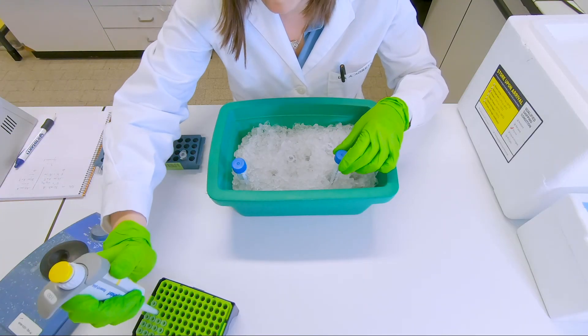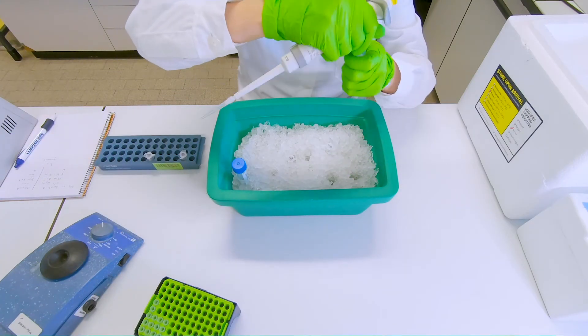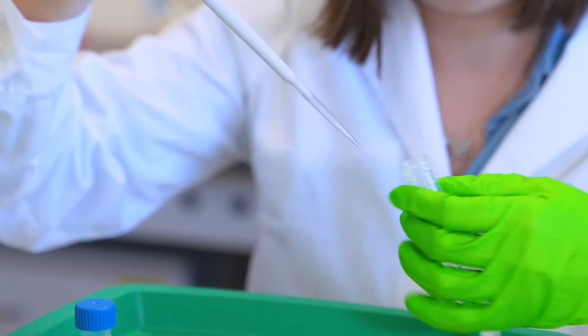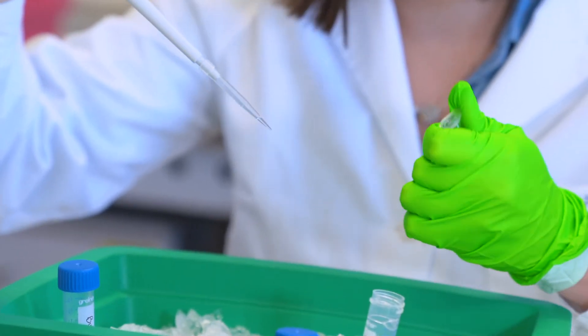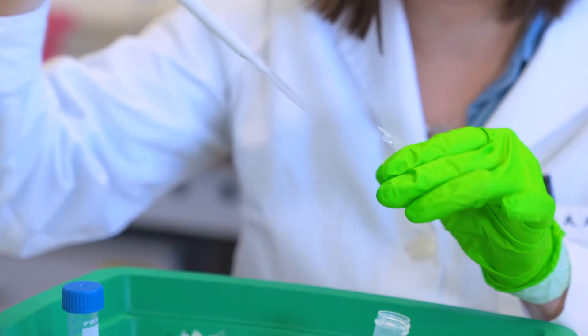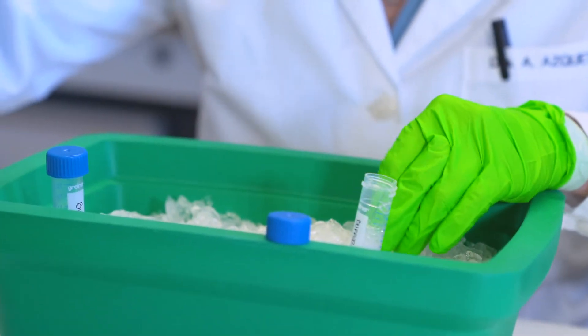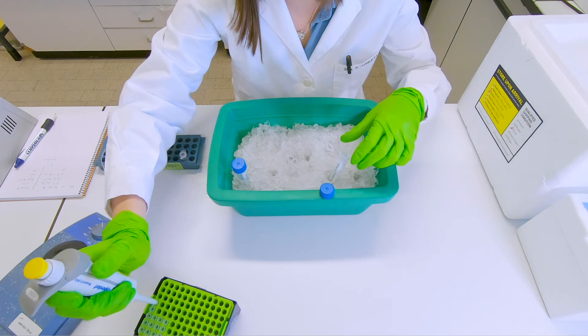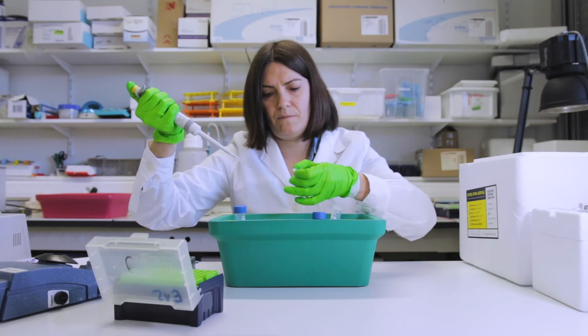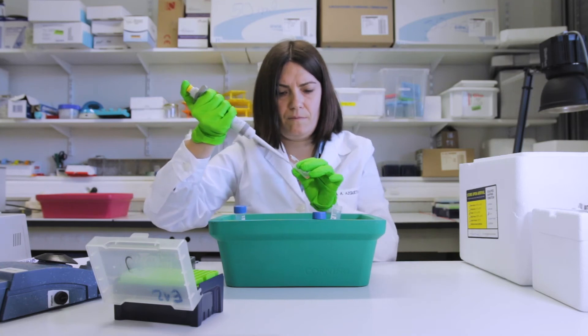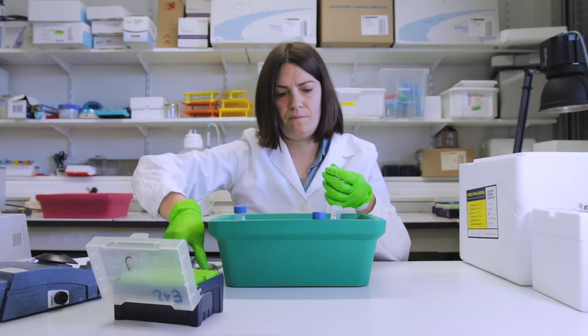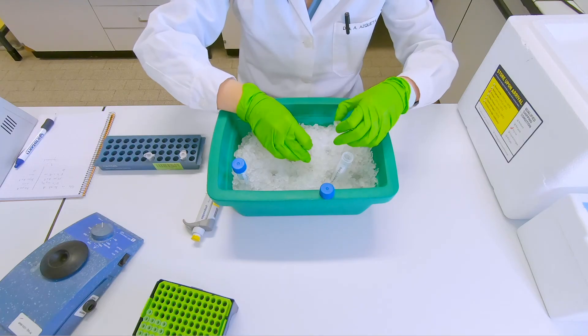We add buffer A with tritone X. The tritone X is a detergent to help with the lysis of the cells. To the aliquot of 50 microliters that we added on top of the cells, we will now add 15 microliters of buffer A with 1% tritone. And to the tissue, since it's double the amount, so to the aliquot of 100 microliters, we will add 30 microliters of buffer A with 1% tritone X. Both will be vortexed again.